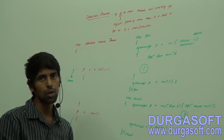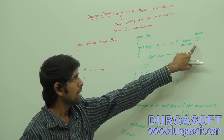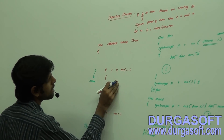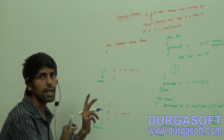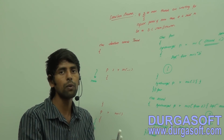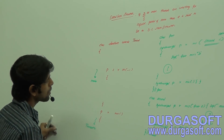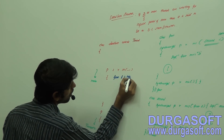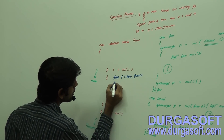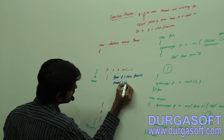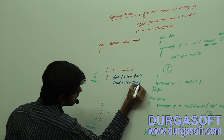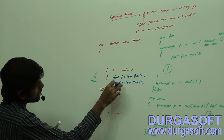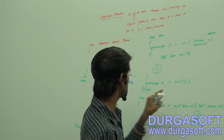Now let us go for the main logic. I am going to create two static identifiers: one of type First and one of type Second. Now, First f = new First() and Second s = new Second(). Main thread is executing these two statements, creating the two instances.